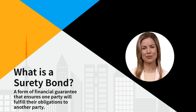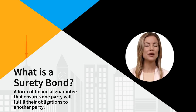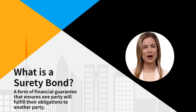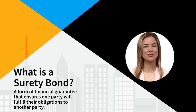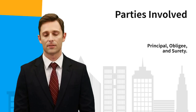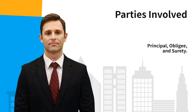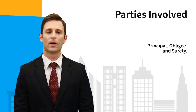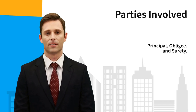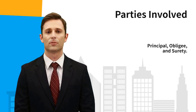But what is a surety bond and why do I need this? A surety bond is a three-party agreement between a principal, an obligator, and a surety. The principal promises to fulfill certain obligations, and if they fail to do so, the surety steps in to compensate the obligator. The principal is the party who obtains the surety bond to guarantee their performance. The obligator is the party who requires the bond as a form of protection. The surety is the company that provides the bond and ensures the obligator's financial protection.